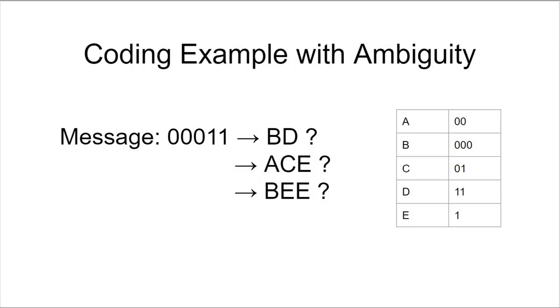Let's have a look at this coding example that codes the letters A, B, C, D, and E using the binary codes shown. So A is two zeros, B is three zeros, and so on.